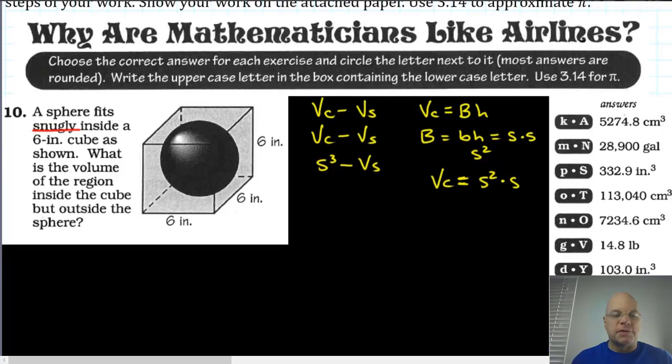We learned today that volume of the sphere can be found using the formula four-thirds multiplied by pi multiplied by the radius of the sphere cubed. So if you can substitute the dimensions we already talked about, if this is the center of the sphere, then this radius must be three since the diameter is six.